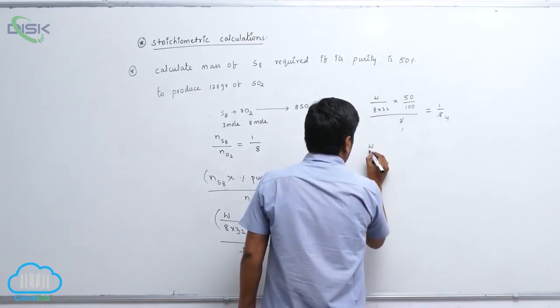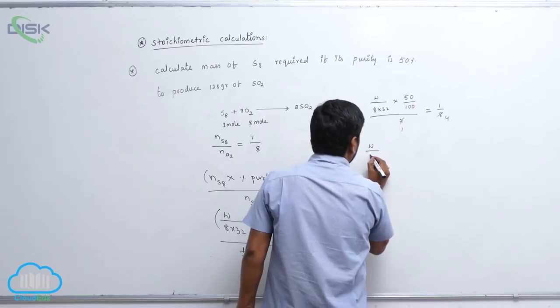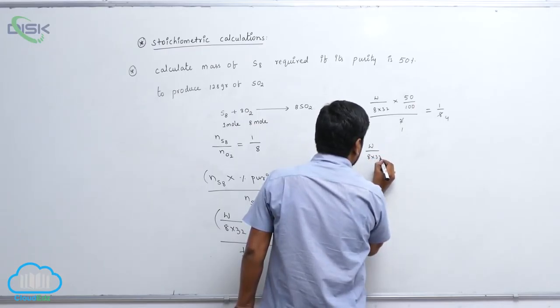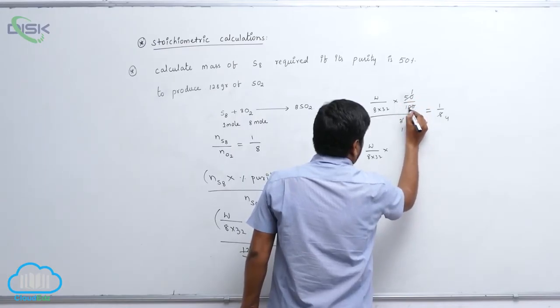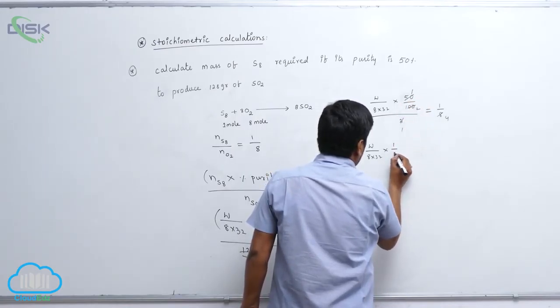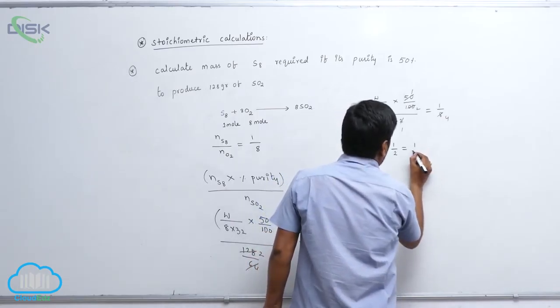So therefore, W by 8 into 32 into, this is 1, this is 2, so therefore 1 by 2 equals to 1 by 4.